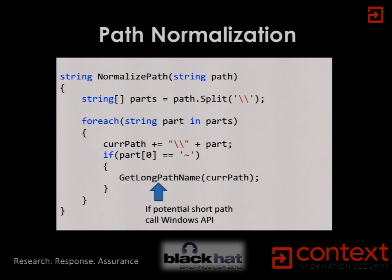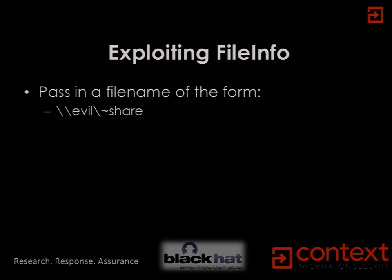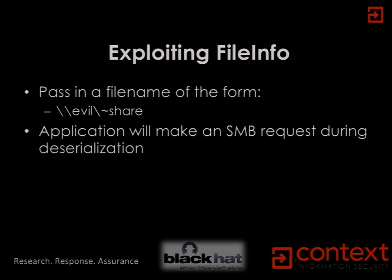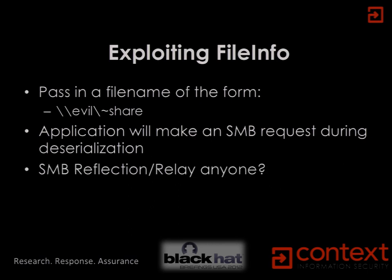GetLongPathName has to refer to the actual file system to do that translation. So if we passed in a file name like '\\evil\~share', what that ends up doing is your application starts making SMB requests back out. You can go to Metasploit, load up the SMB relay module, and potentially exploit this — either doing credential reflection back to the person who generated the request, or relaying that authentication mechanism to another system on a domain.